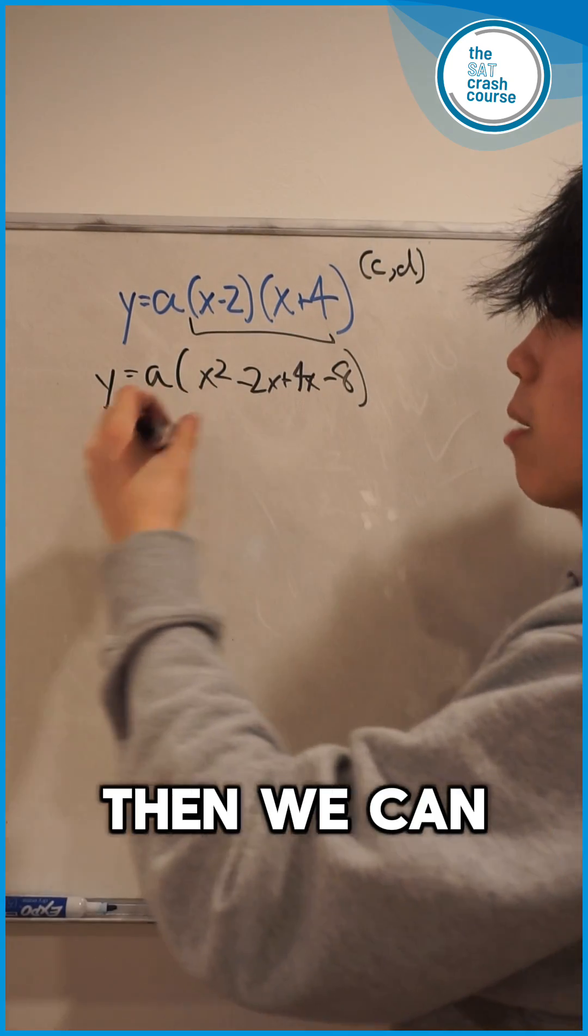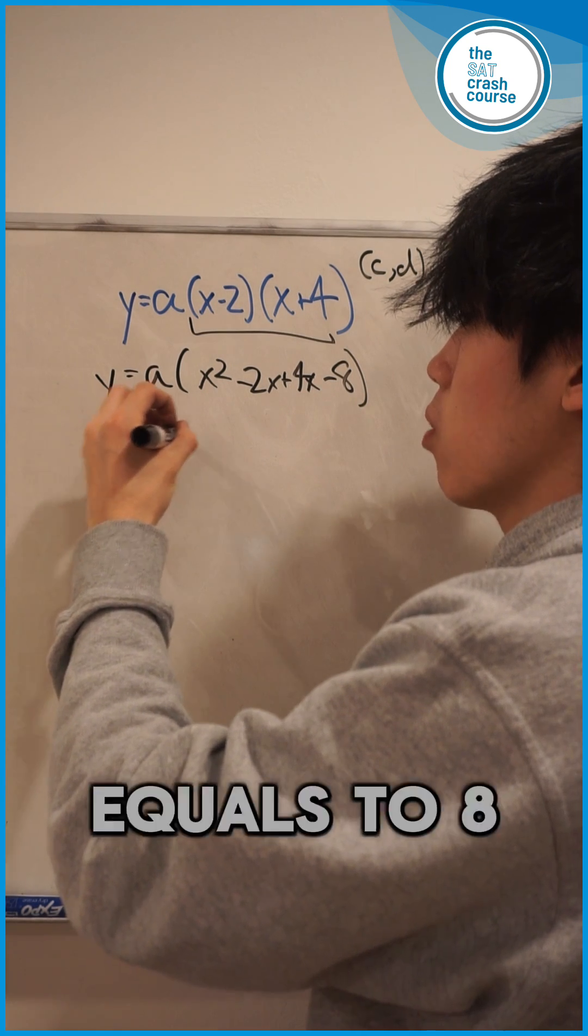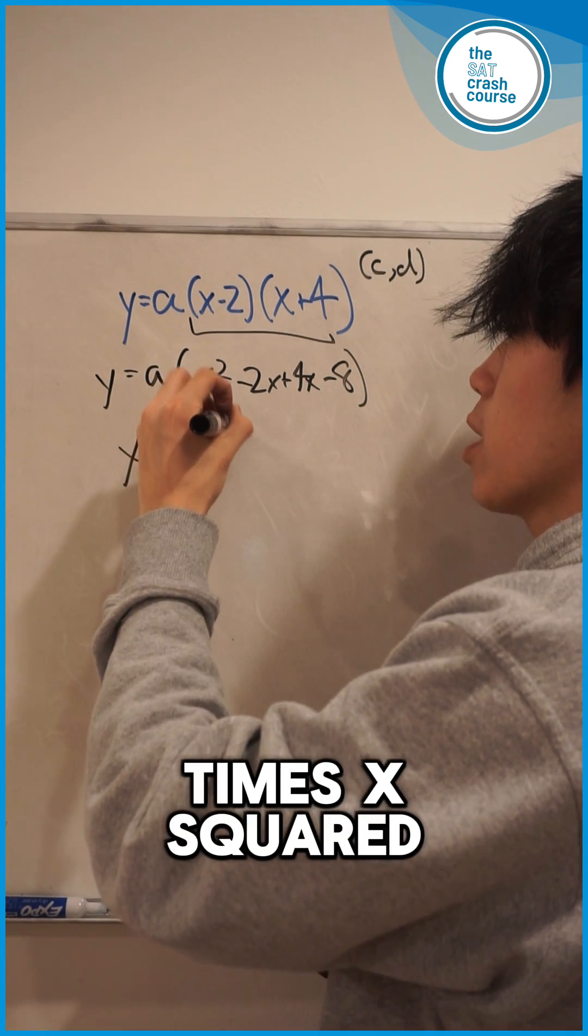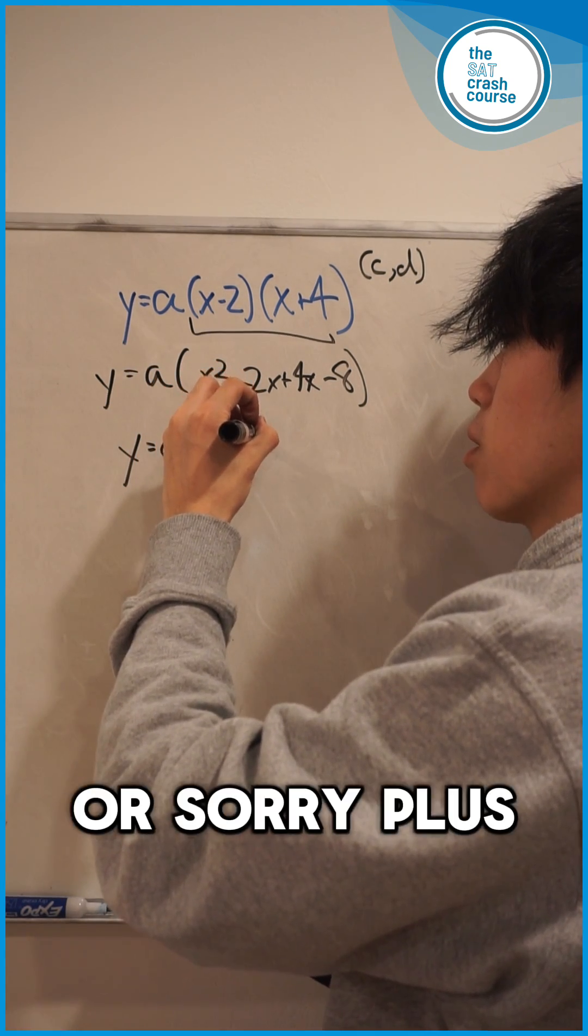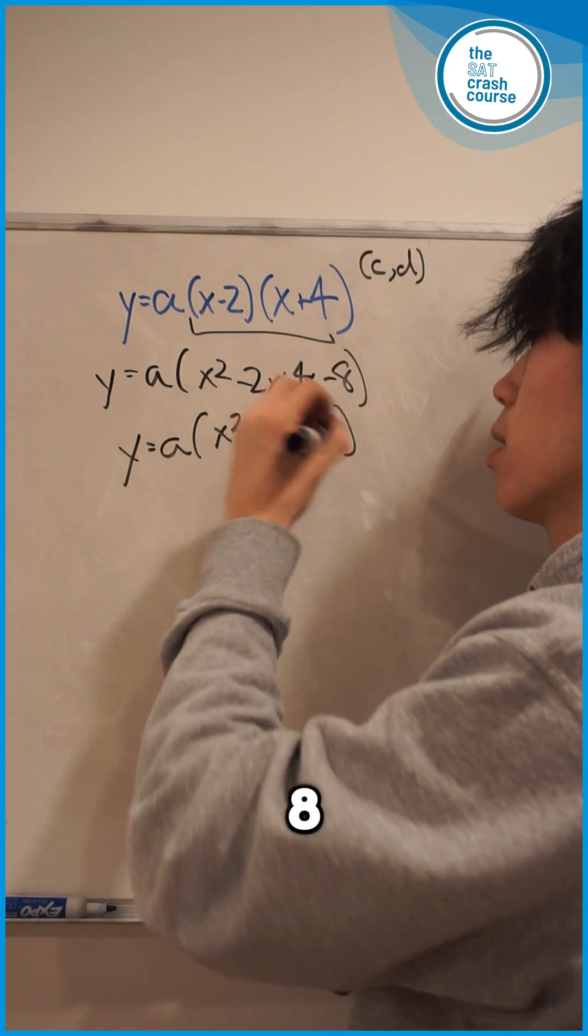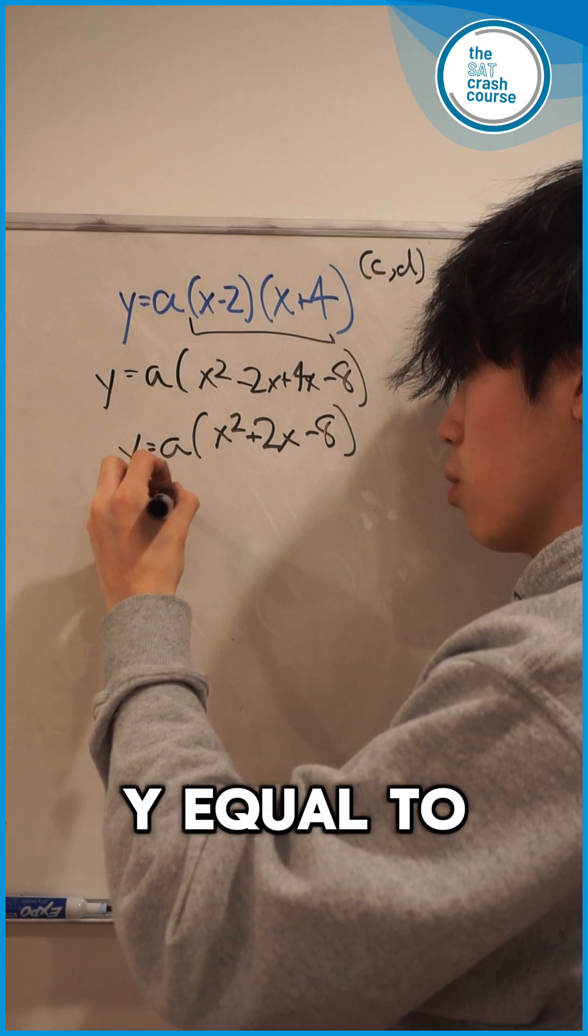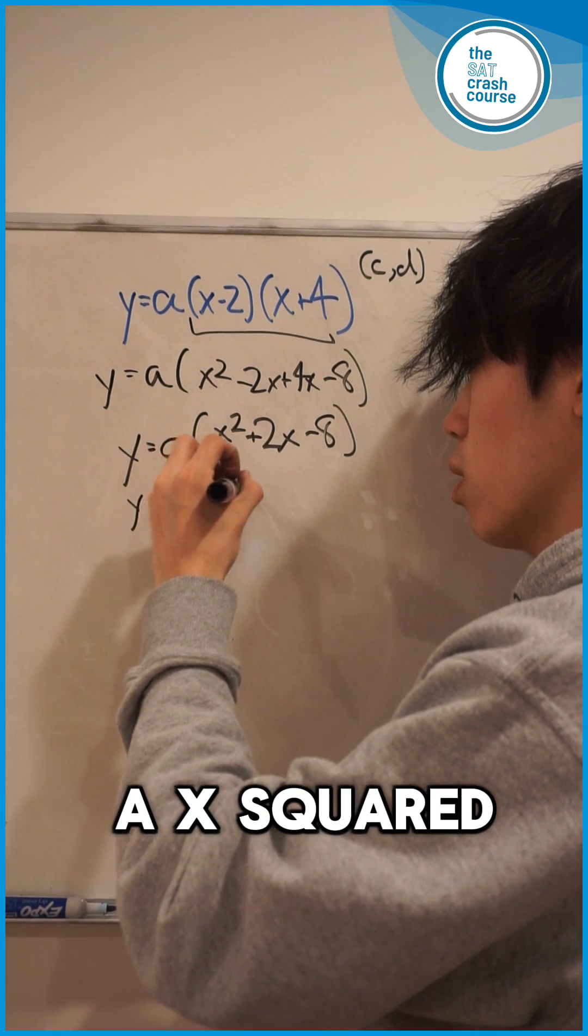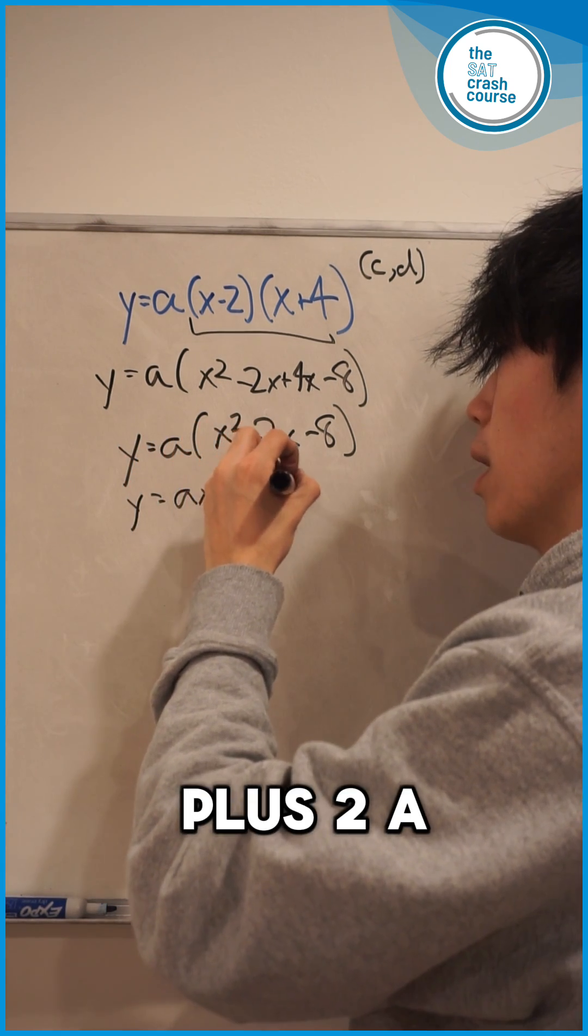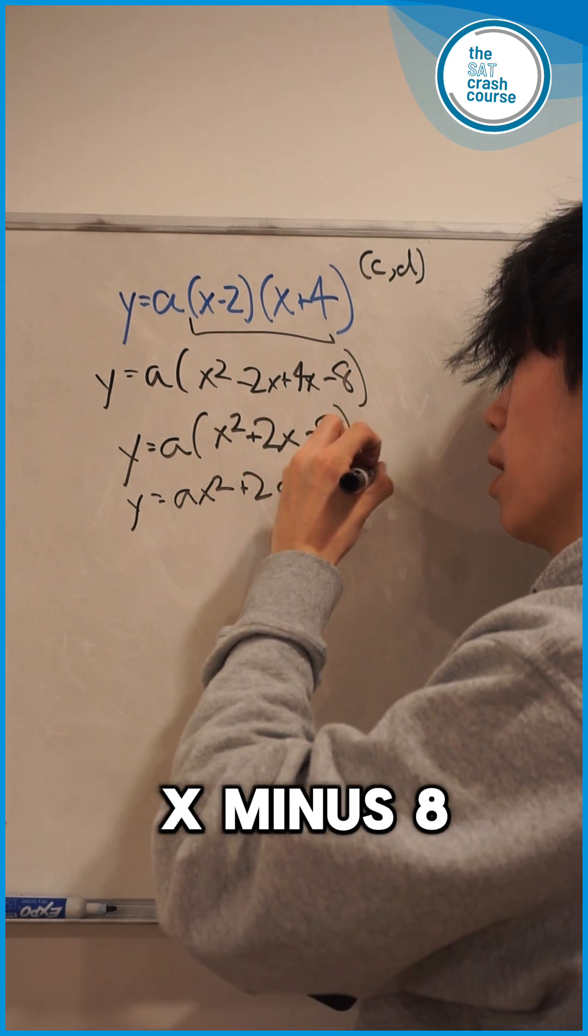Then we can combine those terms to get y equals a times x squared plus 2x minus 8. Now let's distribute this a: y equals ax squared plus 2ax minus 8a.